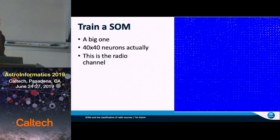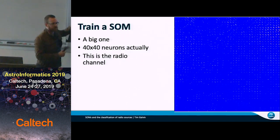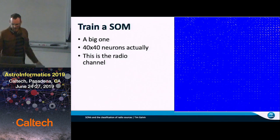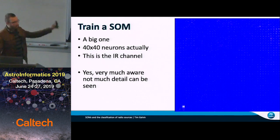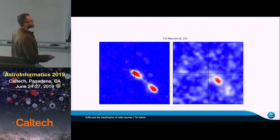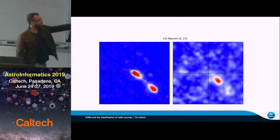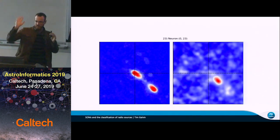This is one of the largest SOMs I've trained — 40 by 40 neurons — shown here as the radio channel from the image cubes. It's very hard to see because it's compressed, but you can make out a change in morphologies. This is the infrared channel, and neurons in the same position on this lattice go hand in hand with one another. To drill down to some examples: on the left is the radio channel, on the right is the infrared. If you look at this, you would say this is an AGN — you have two radio lobes and you've got the infrared host co-located between them. Importantly, this has been learned completely unsupervised, with no masking of nearby sources.